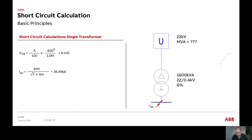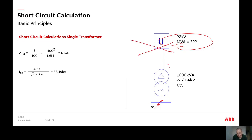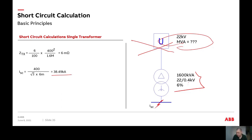Most of the time when I work on projects, information from the utility is missing. So I ignore the utility entirely and work only from the transformer, because if I include the utility later the short circuit current should be lower and we are still safe. Without the utility included, my short circuit current is 38.5 kA, compared to 37.2 kA with it — only slightly higher.